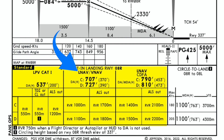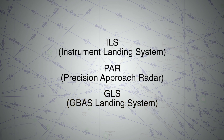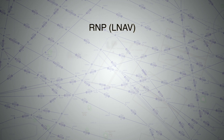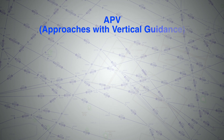LNAV/VNAV is also an APV approach. How about RNP-LNAV approach? Well, this one is non-precision. To give you a trick to remember them all: ILS, Precision Approach Radar, and GLS are all precision approaches. All other approaches that provide only lateral guidance, such as RNP-LNAV, LP, Localizer, VOR, NDB, LDA and so on, are all non-precision approaches. Any approach that provides both lateral and vertical guidance other than ILS, PAR, or GLS is considered an APV approach.